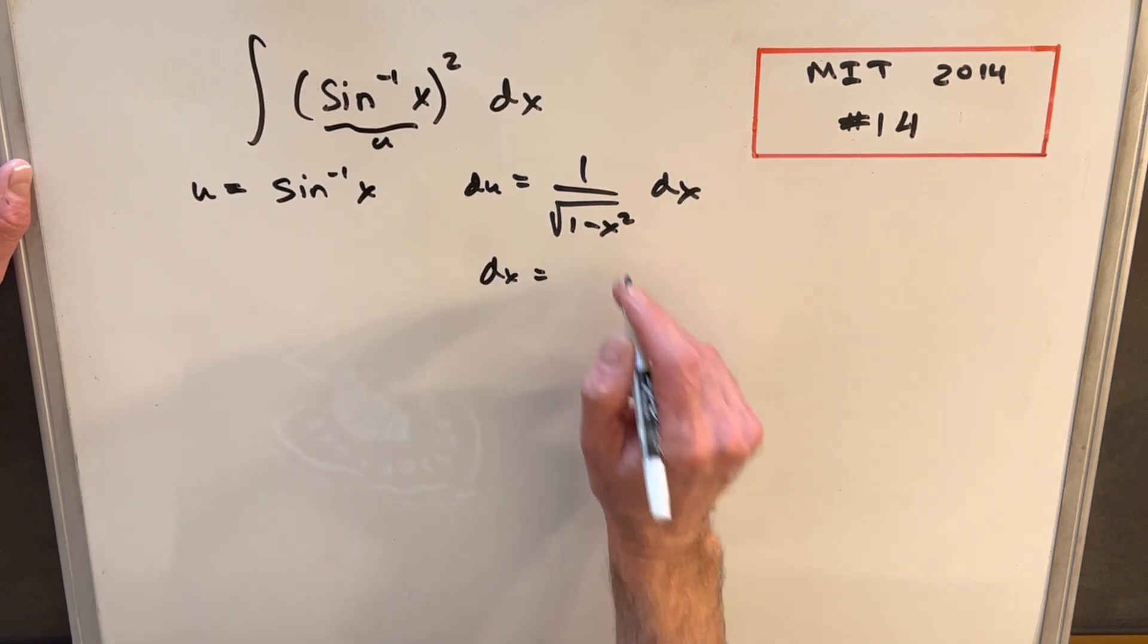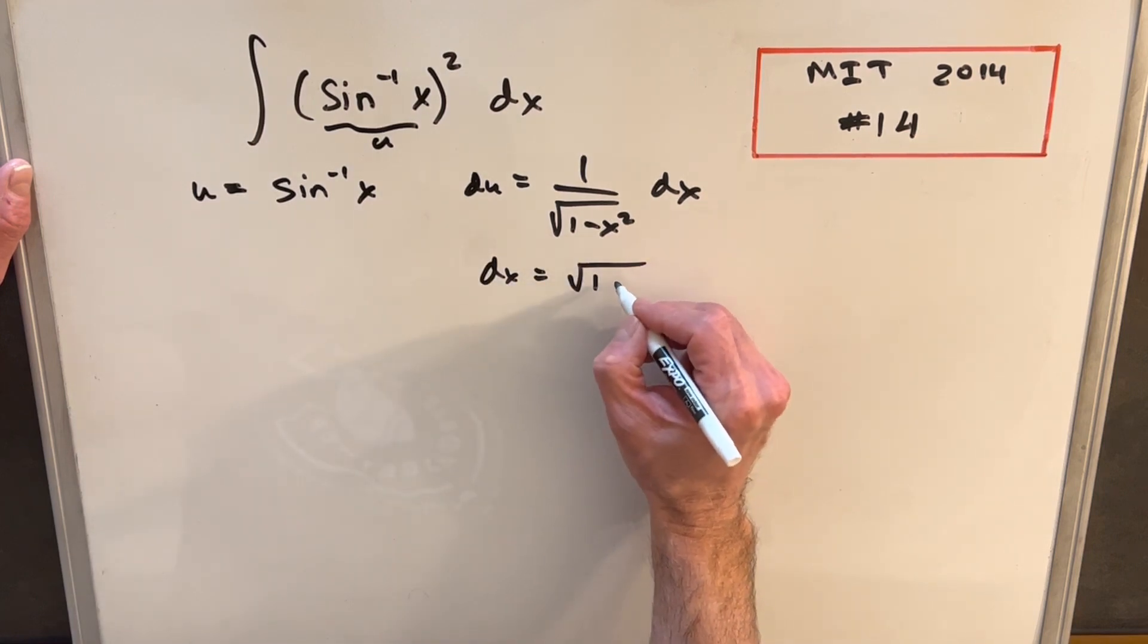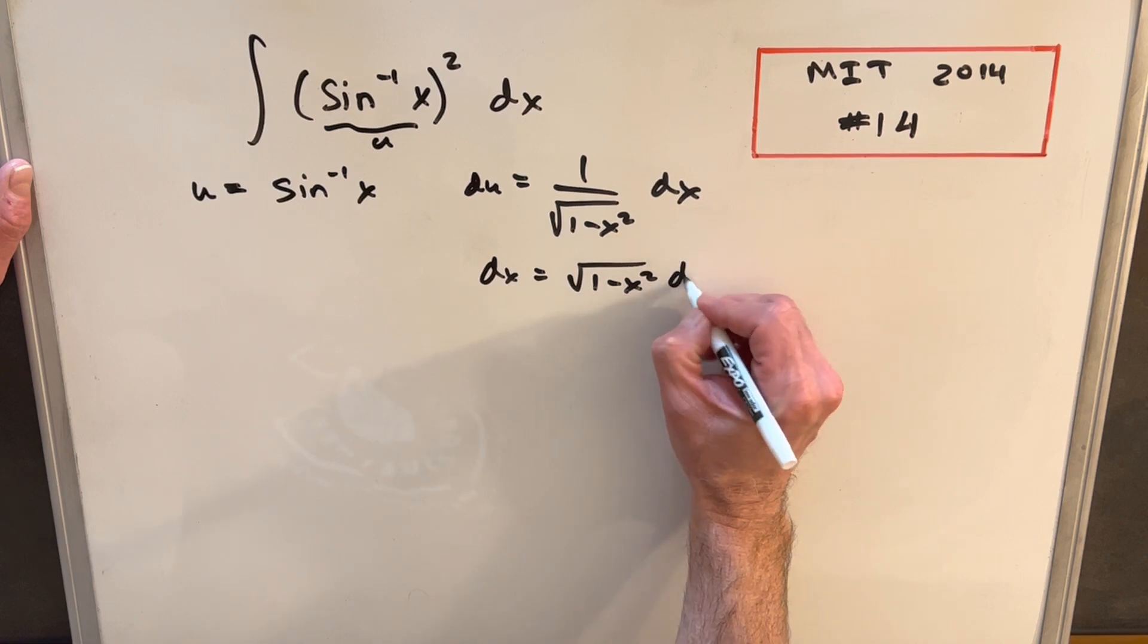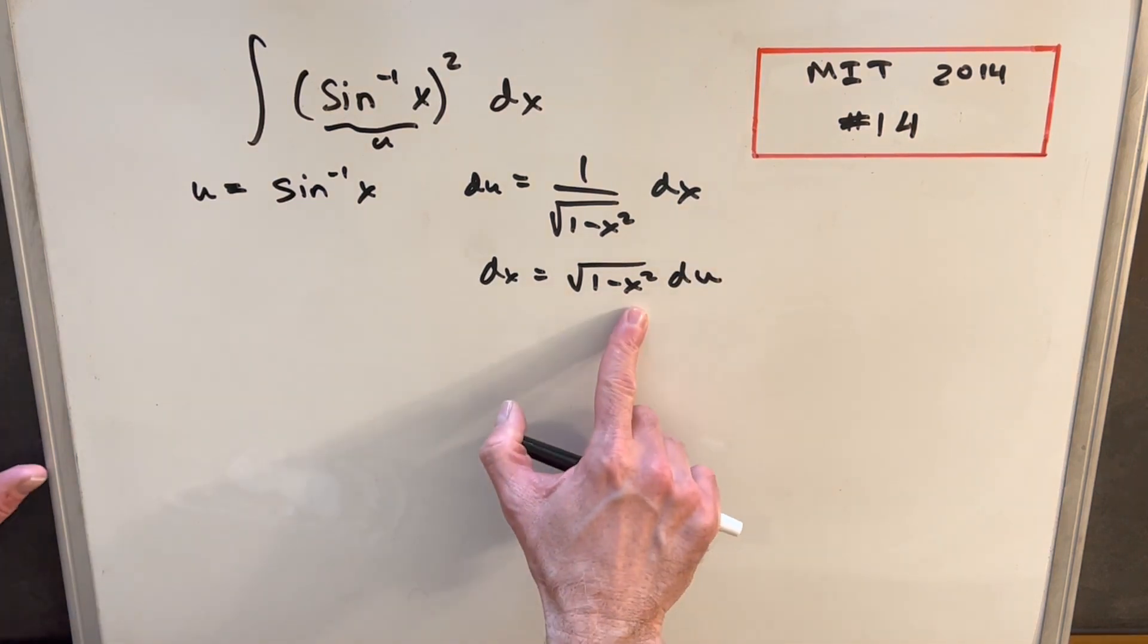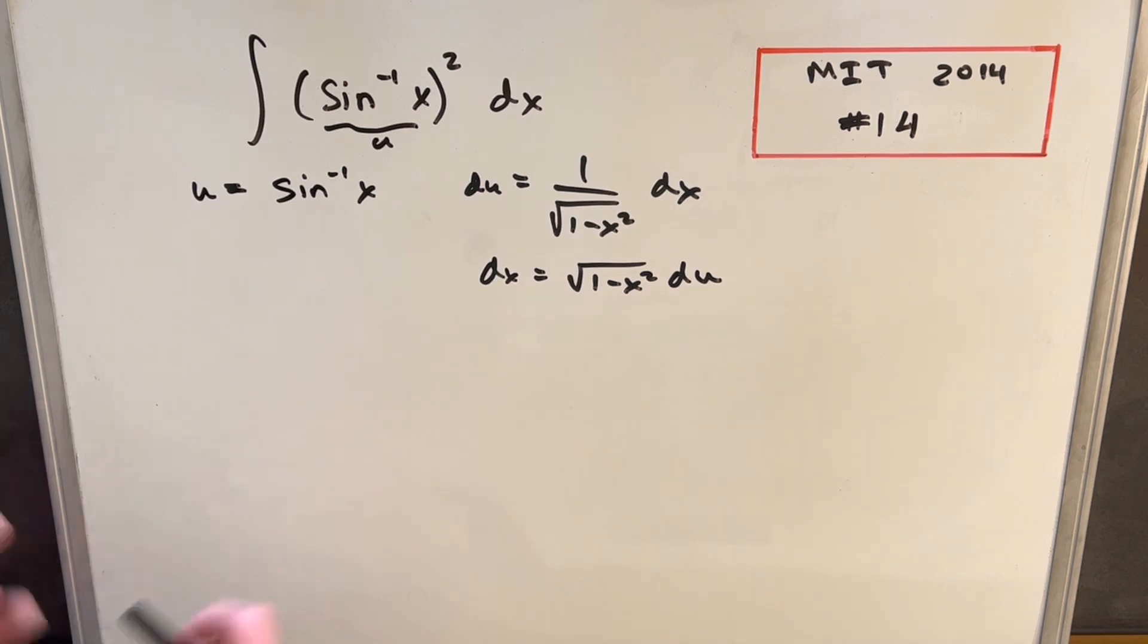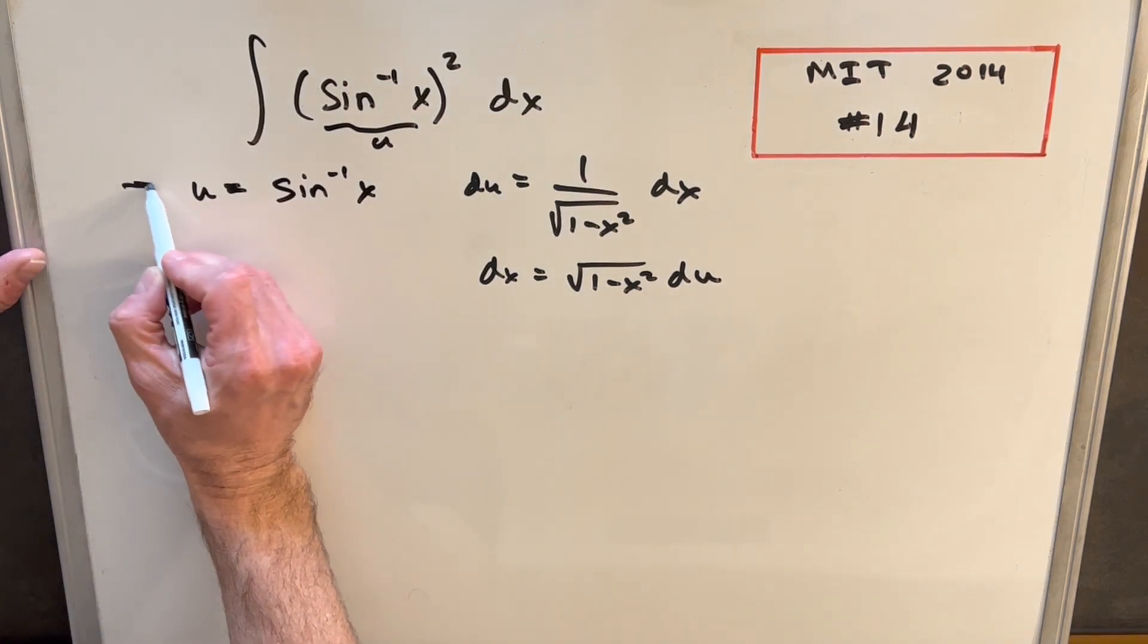And then what I can do, let's just solve for dx. So dx is, we'll take the reciprocal here, we're going to have square root of 1 minus x squared du. And what I want to do is get this all in terms of u. So let's play with this for a second.